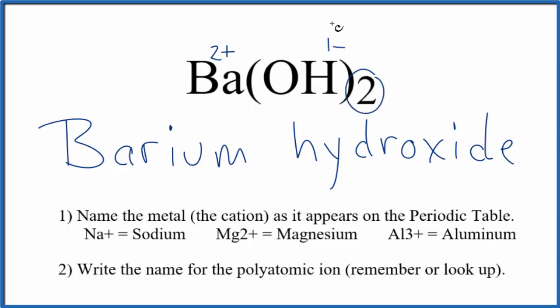So we need two of these 1- ionic charges, these hydroxide ions, to balance out the 2+ on the barium ion. Also note that when we have an OH here, this hydroxide bonded to a metal,